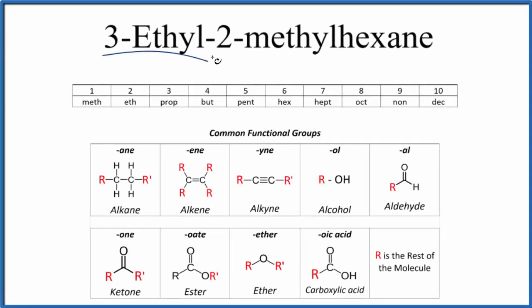Let's write the structure for 3-ethyl-2-methylhexane. We'll also look at the molecular formula, and that is C9H20.